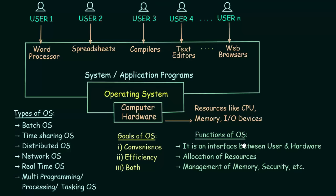Let us see the functions of OS. Number one: it is an interface between the user and the hardware - we just saw that. The second function is allocation of resources. Resources are the hardware we have - the CPU, memory, and IO devices. Since resources are limited, the OS allocates them to different users and processes in an efficient manner so that everybody gets their share.